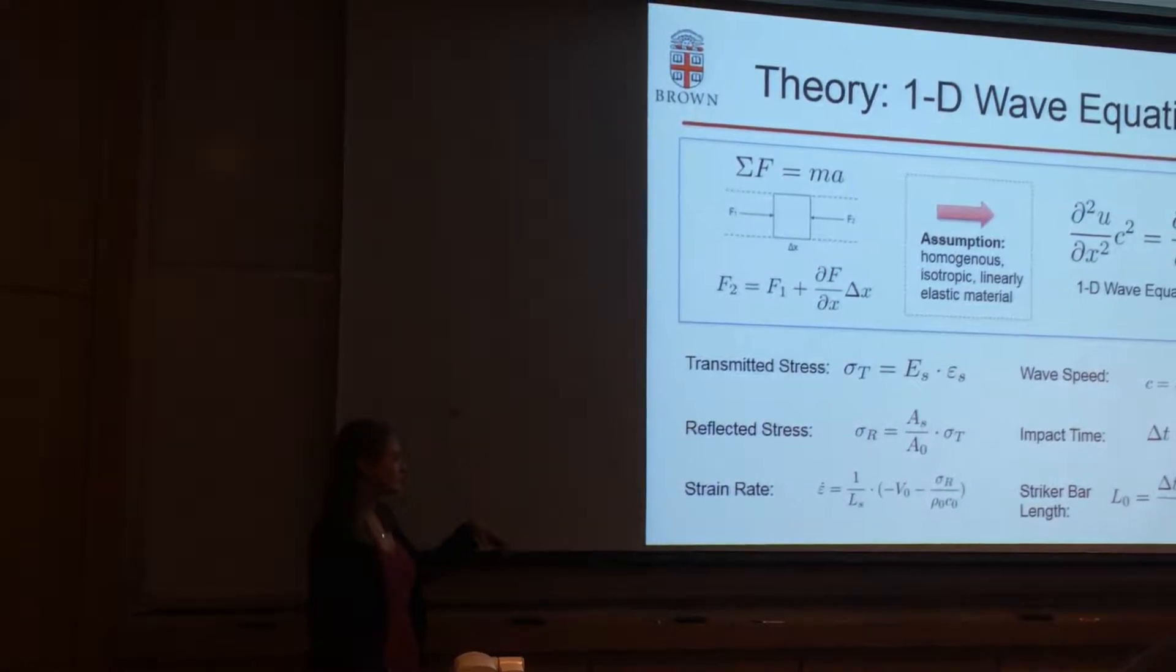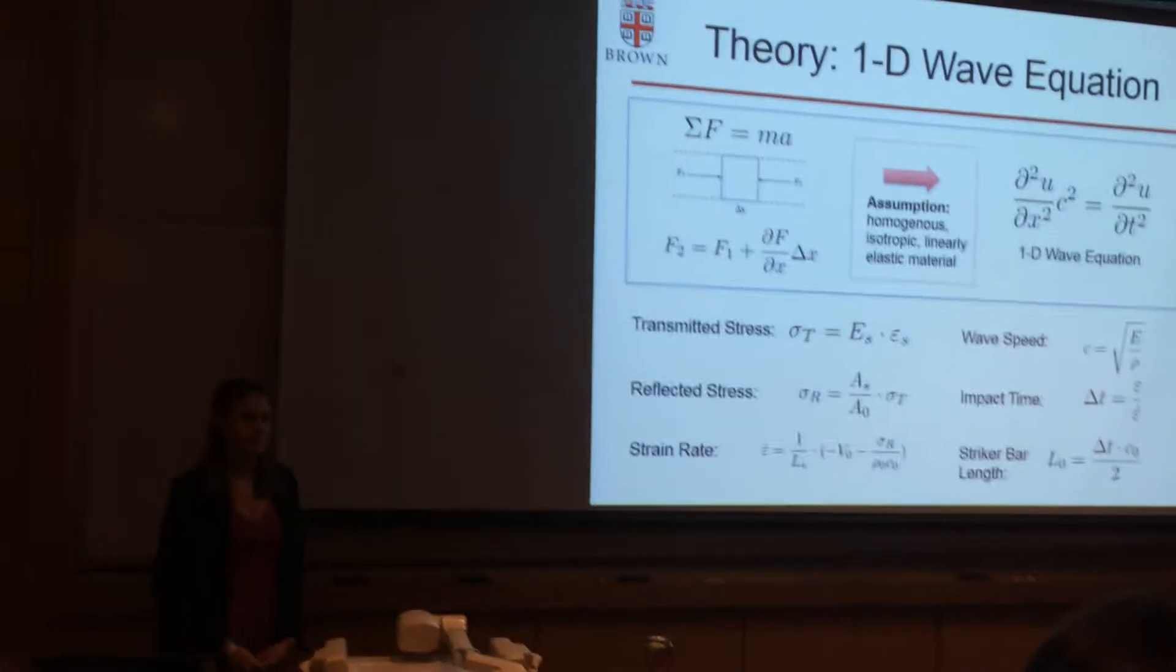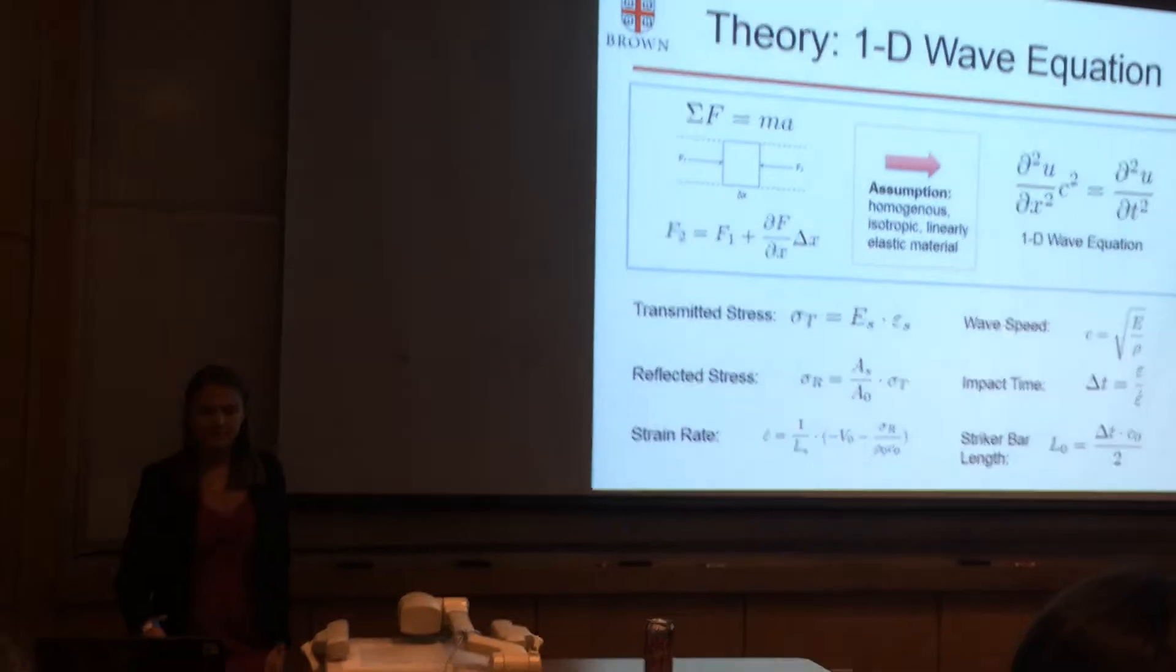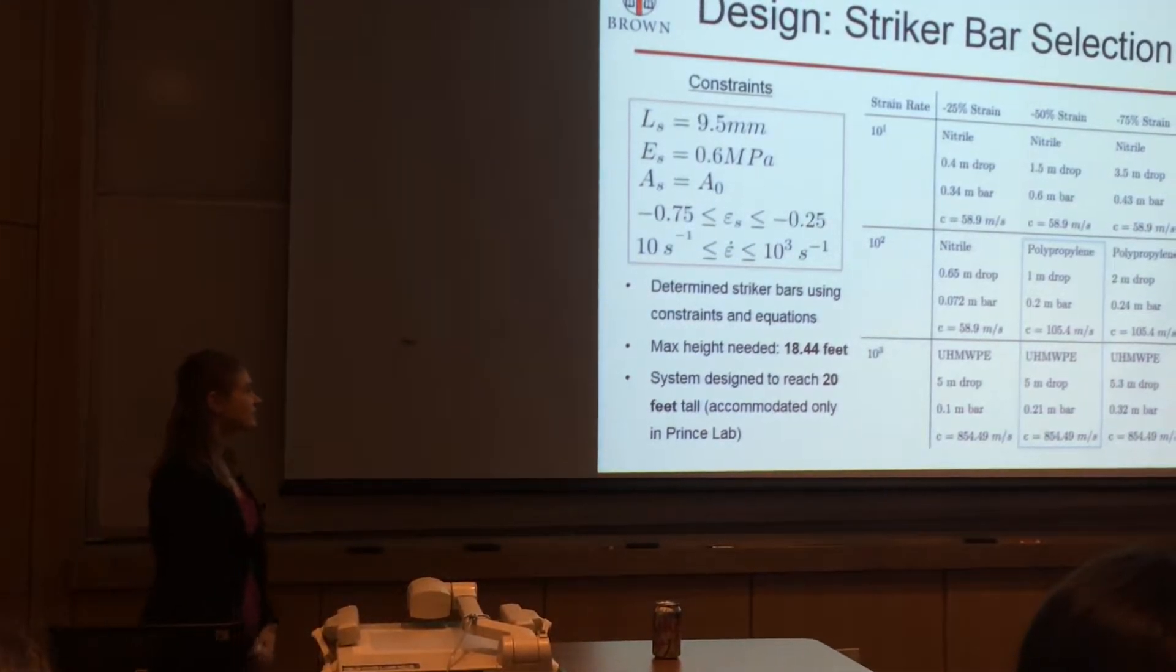All the equations below came from the 1D wave equation and were used to determine the striker bars for desired strains and strain rates. Clearly there are a lot of variables in these equations so I needed to set some constraints.